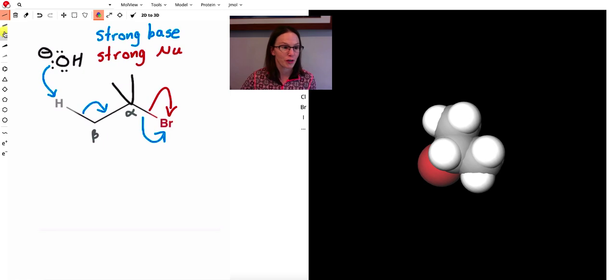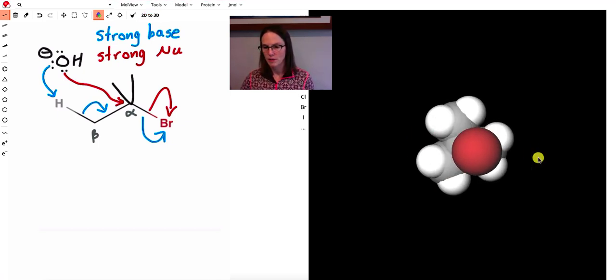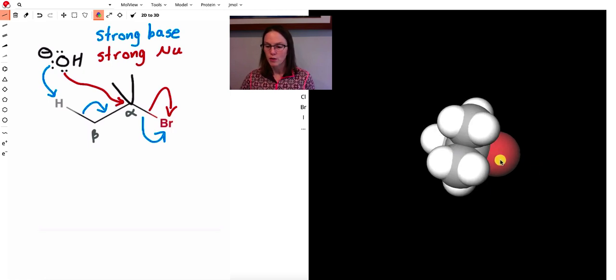What happens then if it's tertiary? Let's put another group on there. So now we've got a tertiary alpha carbon. Let's convert that to three dimensions. Okay, so there's, let's bring it over to this side. So there's the leaving group. Lots of groups around that alpha carbon. We can barely even see that alpha carbon anymore.